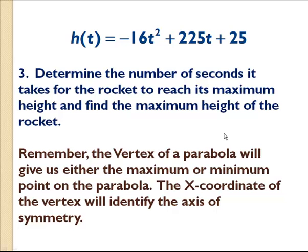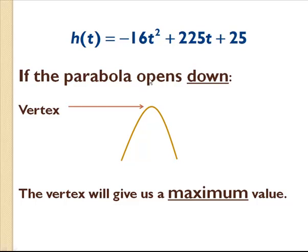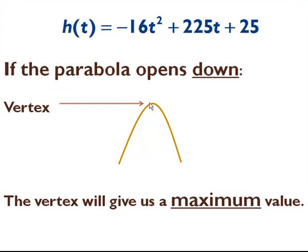Here's a little hint: when we're talking about vertical motion problems and you see the word maximum or minimum, we're typically talking about the vertex of a parabola. When we're dealing with quadratics, we're dealing with parabolas. The vertex of the parabola will give you the maximum or minimum point. The x-coordinate of this vertex identifies the axis of symmetry.